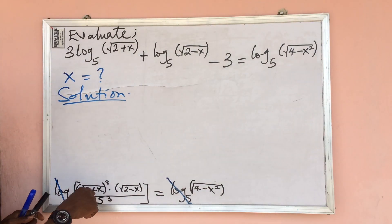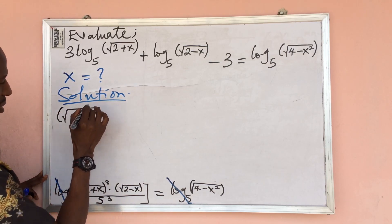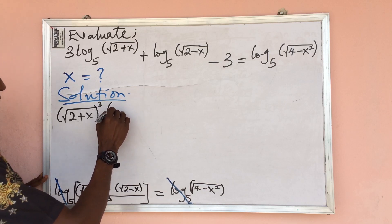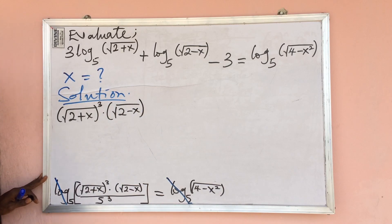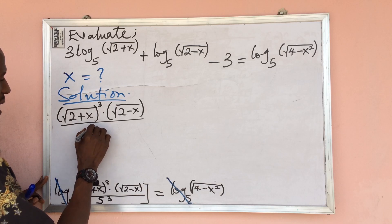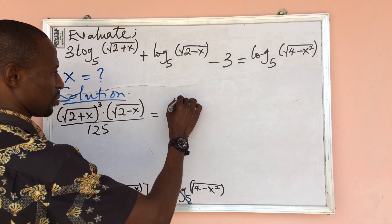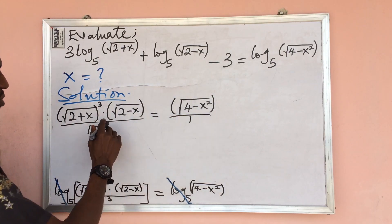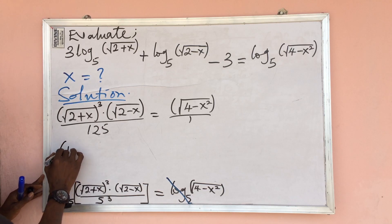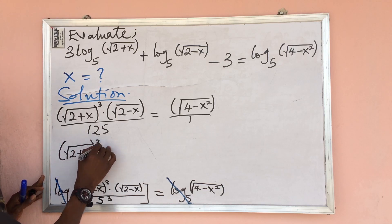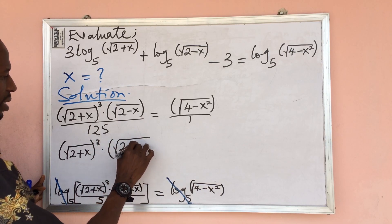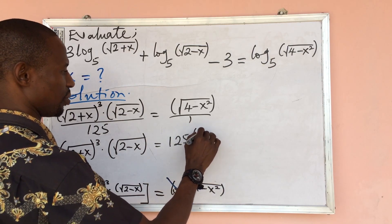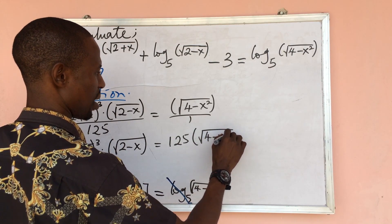After canceling the logs, we have: (root of 2 plus x) to the power of 3 times (root of 2 minus x), all over 5 cubed which is 125, equal to the square root of (4 minus x squared). We cross-multiply to eliminate the 125, giving us: (root of 2 plus x) to the power of 3 times (root of 2 minus x) equal to 125 times (root of 4 minus x squared).